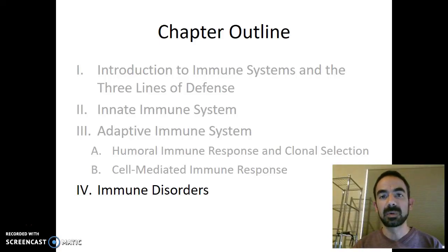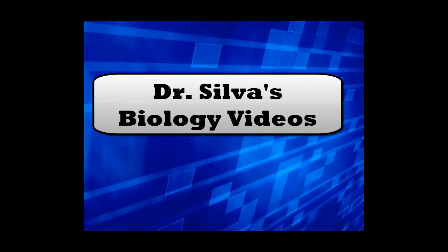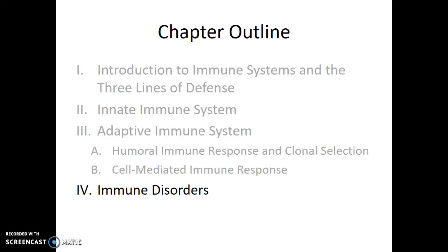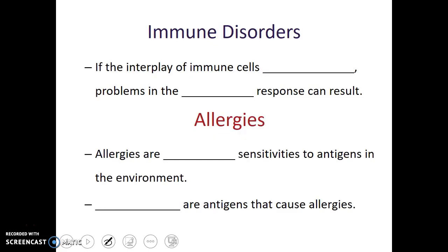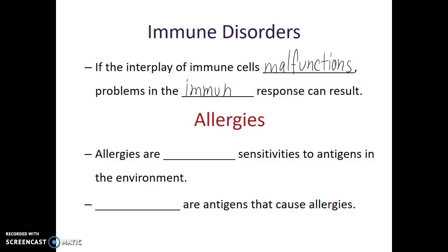In this last video on the immune system, we're going to talk about what happens when it doesn't function like it should. We're going to discuss immune disorders. It requires a lot of different cells functioning together for our immune system to work like it should. If that interplay of immune cells malfunctions, problems in the immune response can result. These malfunctions of the immune system can run the gamut from mild annoyances to life-threatening conditions.